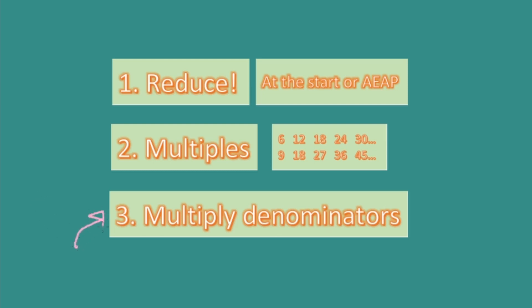And that's a main message I want you to remember about these methods. While multiplying your denominators to find a shared denominator will always work, it won't always give you the smallest one. But the good news is it will work even if you can't reduce or finding multiples would mean creating a very long list.